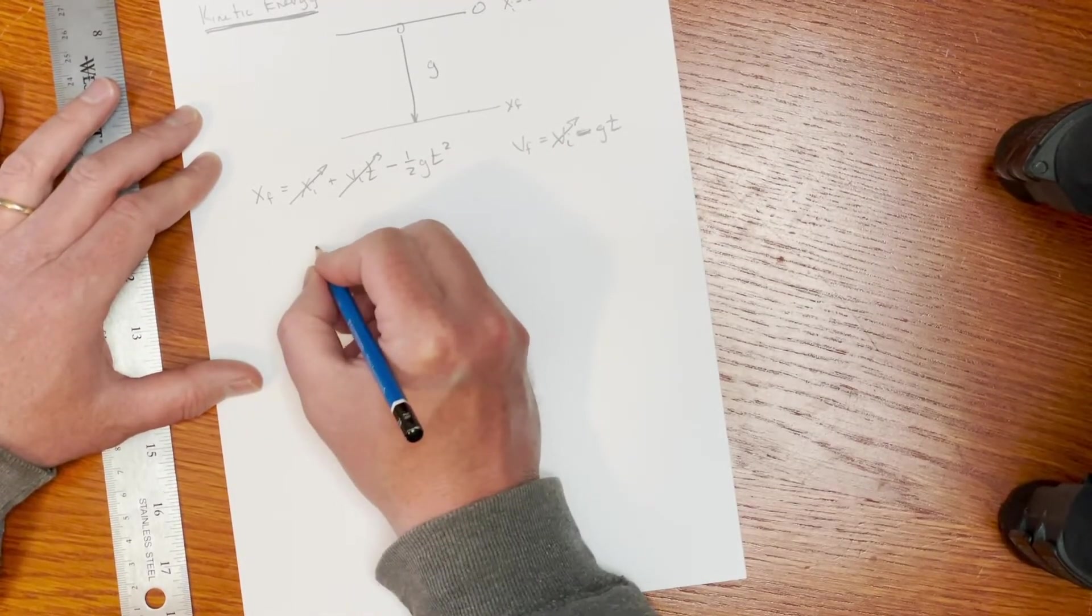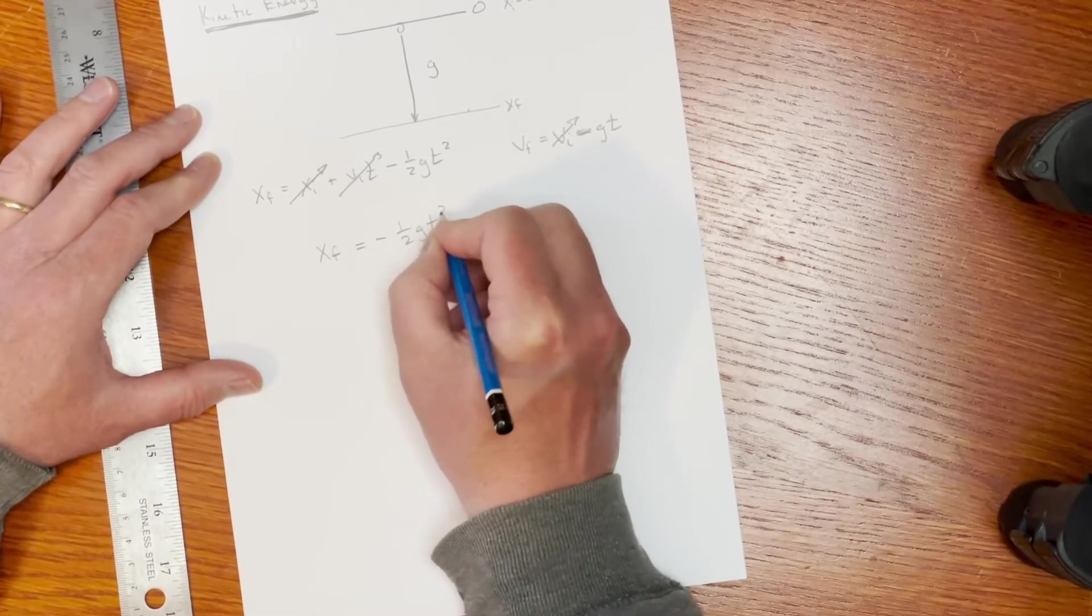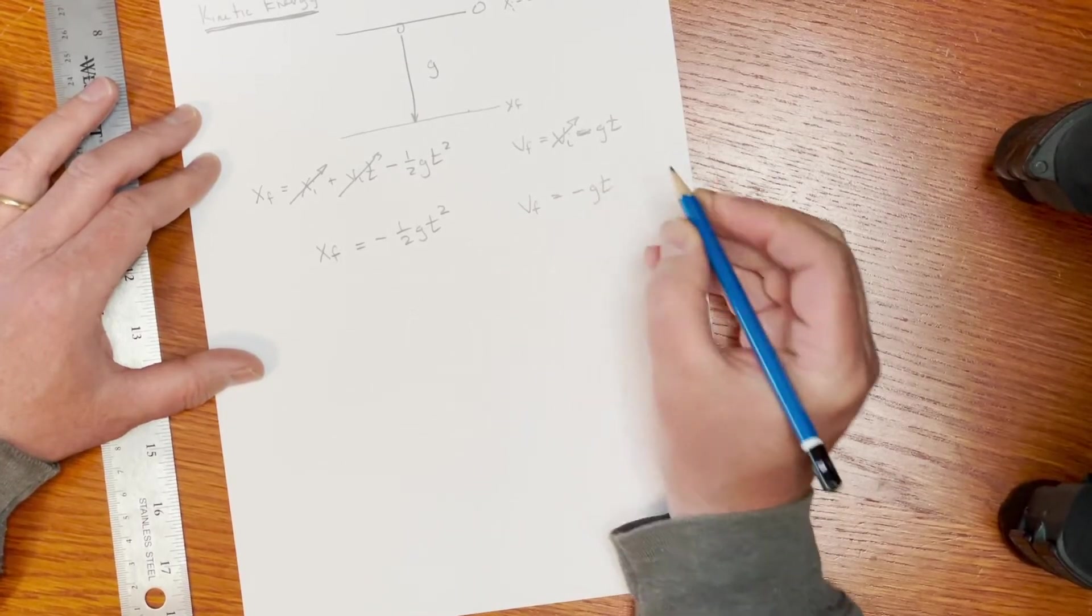And I'm going to get these two equations, x_f is equal to minus one half g t squared. And then I get v_f is equal to minus g t.